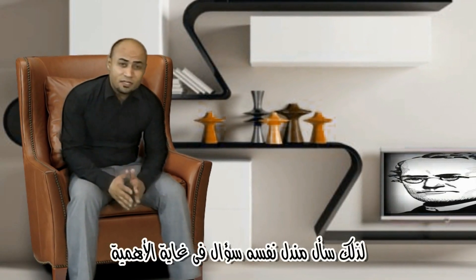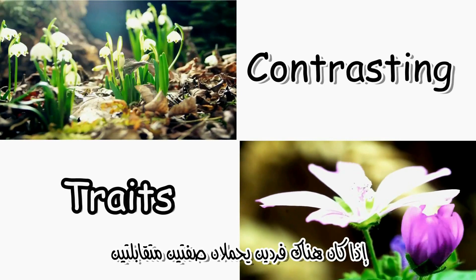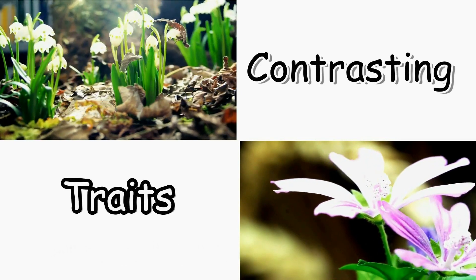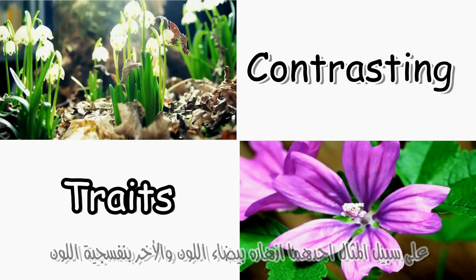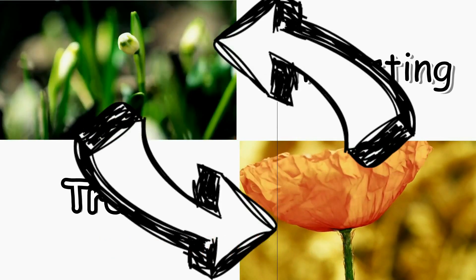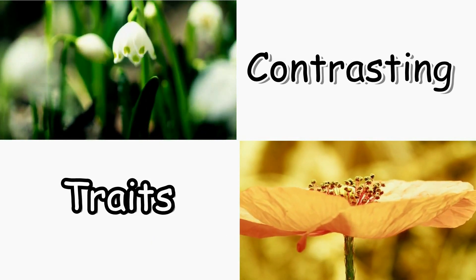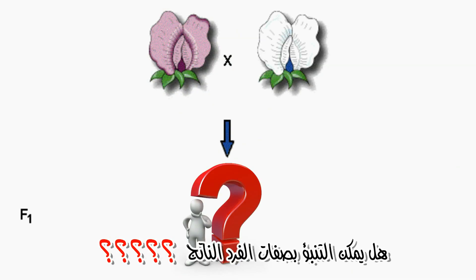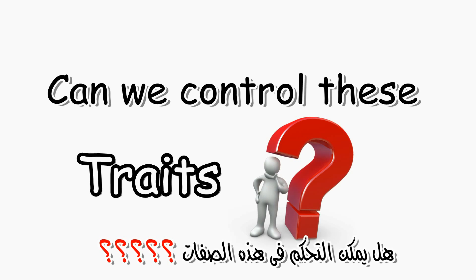Mendel asked himself a very important question. If two individuals carry contrasting traits — for example, one with a white flower while the other with a violet flower — are crossed, what is the trait of the offspring generation? Is it white? Or what? Can we predict the traits of the individuals? Can we control these traits?